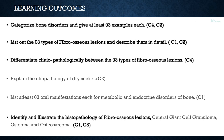You should be able to list out the three types of fibro-osseous lesions and describe them in detail, and differentiate clinico-pathologically between the three types. You should also be able to explain the etiology of dry socket, list at least three oral manifestations each for metabolic and endocrinal disorders of bone, and identify and illustrate the histopathology of fibro-osseous lesions, central giant cell granuloma, osteoma, and osteosarcoma.